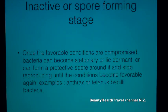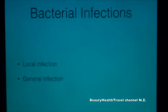In the inactive or spore-forming stage, once favorable conditions are compromised, bacteria can become stationary or lie dormant, or form a protective spore around themselves and stop reproducing until conditions become favorable again. Examples include anthrax or tetanus bacilli bacteria.